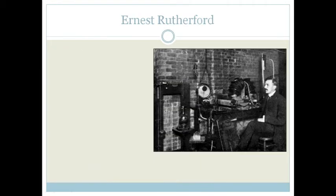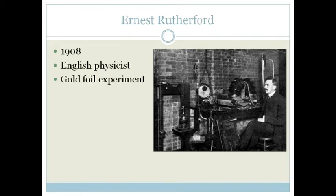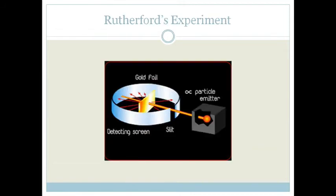Now, Ernest Rutherford came up in 1908 with a different experiment. He was also an English physicist. He came up with a gold foil experiment. Now, what you need to understand about this experiment before we show you the animation of it, was that he took an alpha particle emitter. Now, alpha particles are really big particles, and he shone them in a beam through a gold foil, a thin sheet of gold foil, like thin as a tissue, onto a detecting screen.